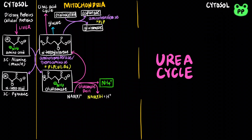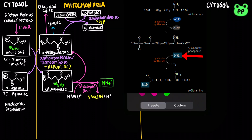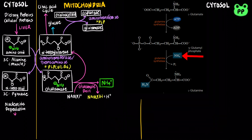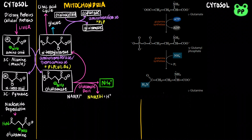On the other hand, the free ammonia generated by nucleotide degradation and other catabolic processes is combined with glutamate by glutamine synthetase to form glutamine, which serves as a non-toxic transport form of ammonia to the liver for processing.